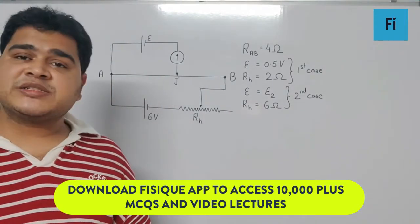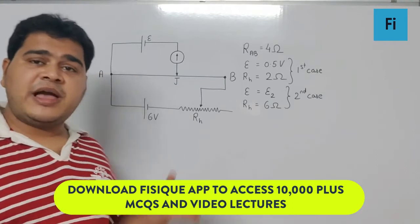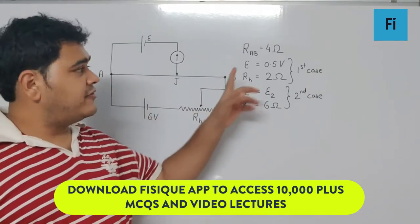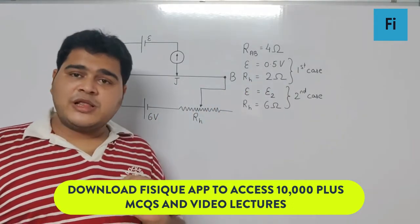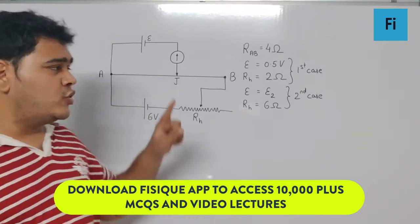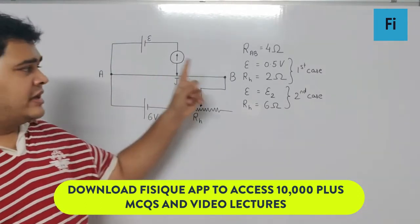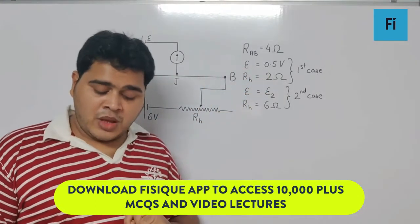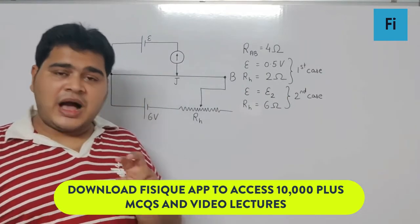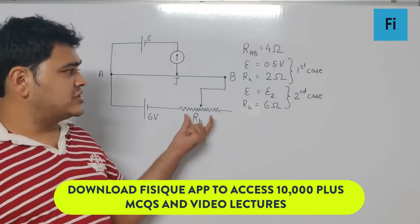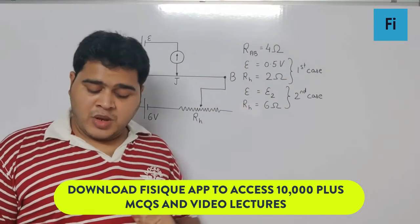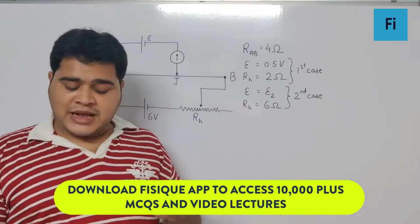The resistance of the meter bridge AB, as given in the figure, is 4 ohms. With a cell of EMF E equal to 0.5 volts and rheostat resistance R_H equal to 2 ohms, the null point is obtained at some point J. This is the first case.